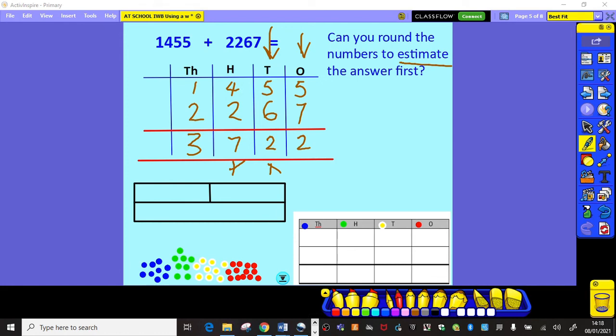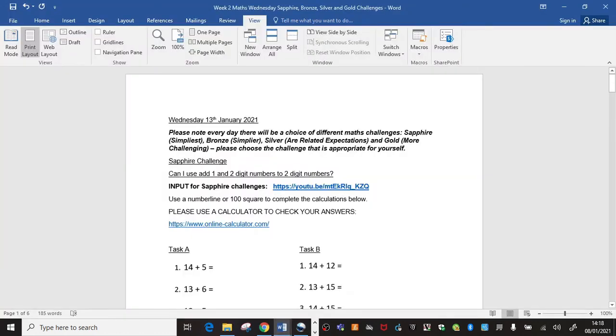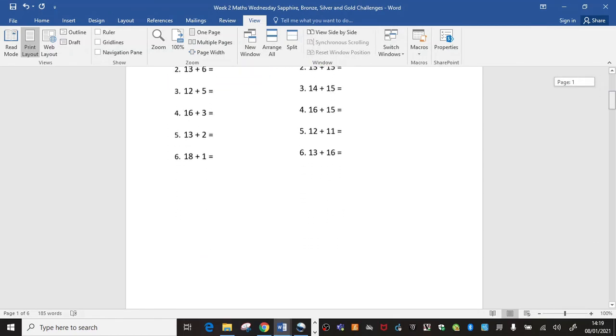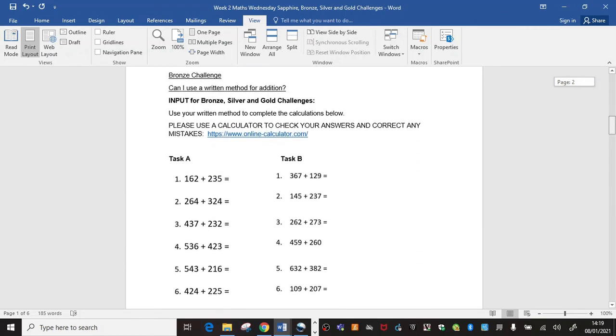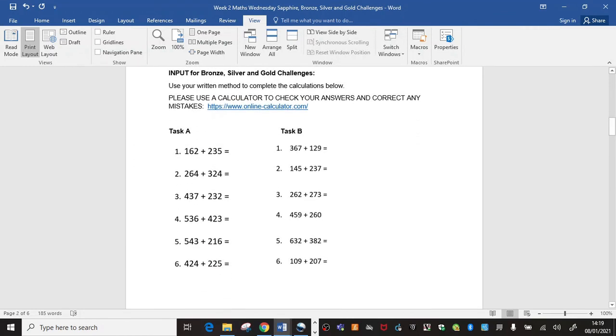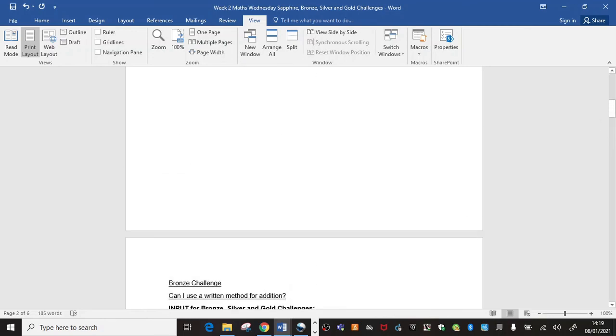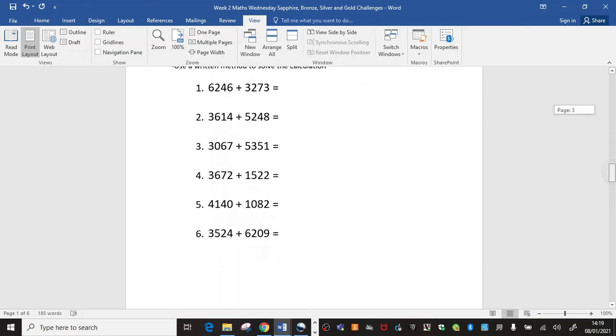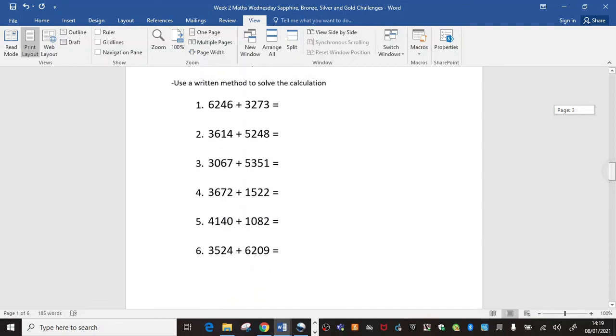Now, in terms of your tasks today, the Sapphire challenge, hopefully will have watched the video on there for input looking at different strategies they can use to tackle their calculations. The Bronze challenge today are very much adding 3-digit numbers to 3-digit numbers. There's quite a few calculations there but don't be put off. You'll find in task A there isn't any exchanging at all and that you can do them fairly swiftly. The Silver challenge moves on to 4 digits add 4-digit numbers and there will be exchanging.